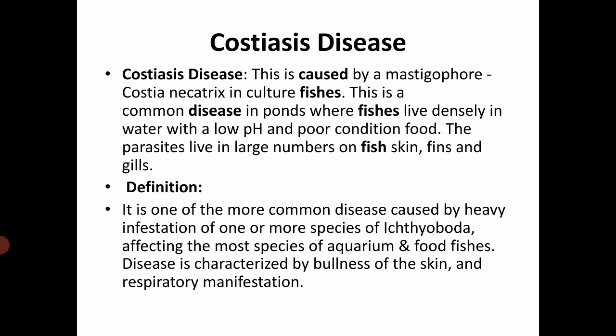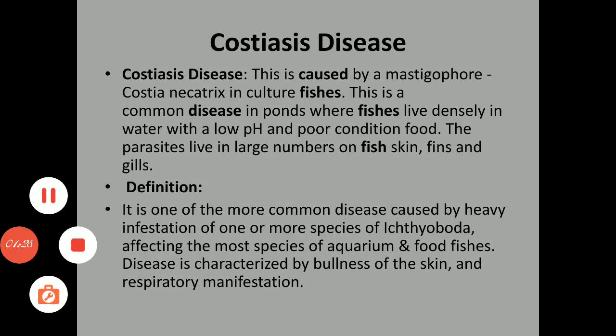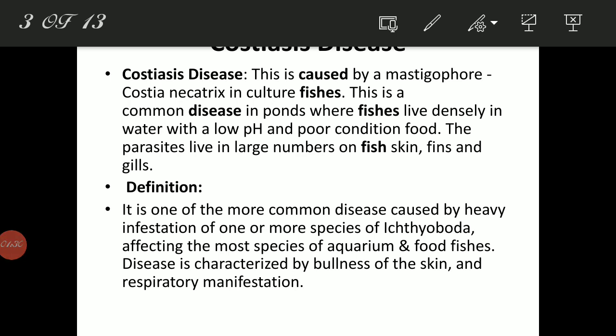What is Costia disease? This is caused by a flagellate, Costia necatrix, in cluster fish. This is a common disease in ponds where fish live densely in water with a low pH and poor food condition. The parasites live in large numbers on fish skin, fin and gills. Definition: it is one of the more common diseases caused by heavy infestation of one or more species of Costia, affecting most species of aquarium and food fishes. Disease is characterized by dullness of skin and respiratory manifestation.